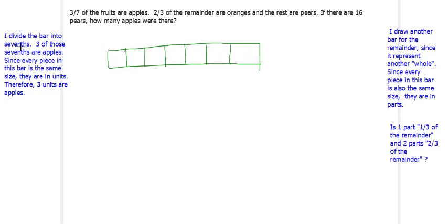As you mentioned, I divide the bar into sevenths, three of those sevenths are apples. You're right, so I'm going to show these as apples. Since every piece in this part is the same size they are in units, therefore three units are apples. Yes, you are right.